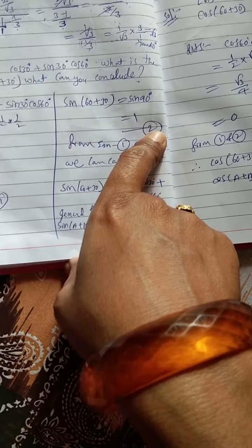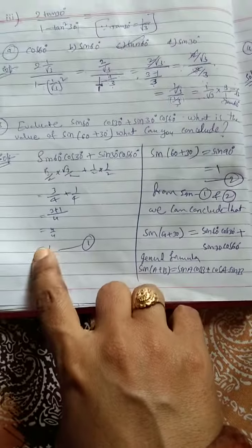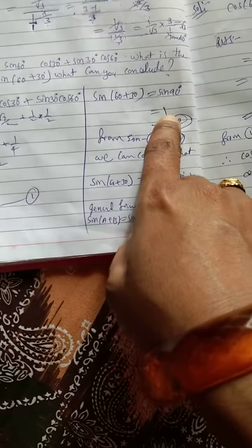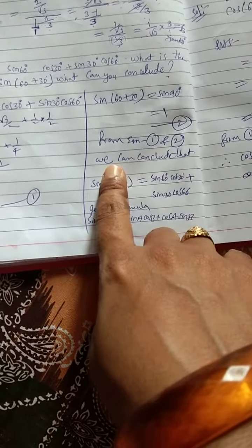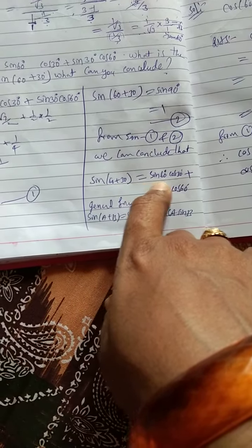Let us say equation 2. From equation 1 and equation 2, see here we are getting one answer. Here also we got one answer. So we can conclude that sin 60 plus 30 is equal to sin 60 cos 30 plus sin 30 cos 60.